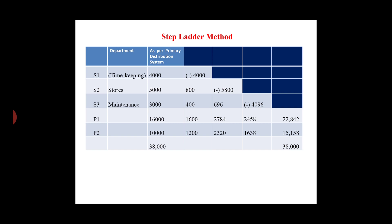The total cost allocated behind the expenses comes to 22,842 for P2. For production department P1 and P2 combined, the total expense is 15,000 and 158,000, giving a grand total expense of 38,000 across all departments.